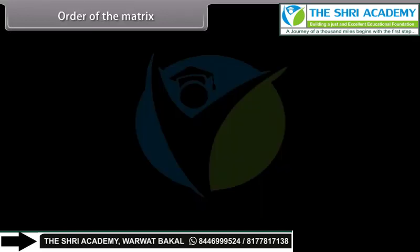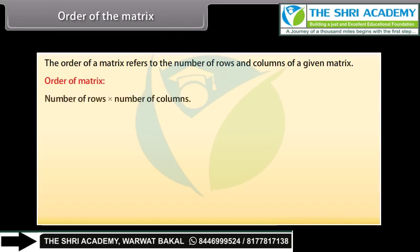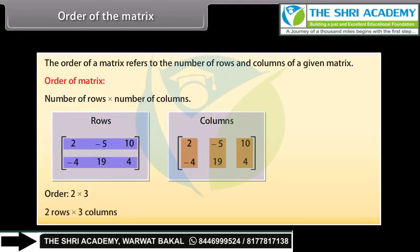Order of the matrix. The order of a matrix refers to the number of rows and columns of a given matrix. By convention, the order of a matrix is given by number of rows by number of columns. Here we can see two pictures of the same matrix with the rows and columns highlighted. The order of this matrix is 2 by 3, that is, 2 rows by 3 columns.